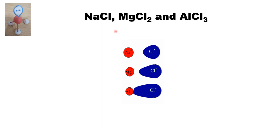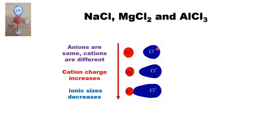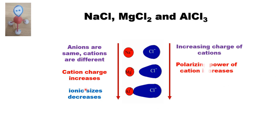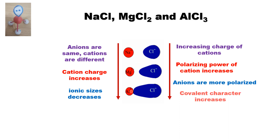In NaCl, MgCl₂, and AlCl₃, the cations are different but the anions are the same. The cation charges are +1, +2, and +3 respectively, meaning cation charge is increasing and ionic size is decreasing. So when cation charge increases or ionic size decreases, the polarizing power of the cation increases.